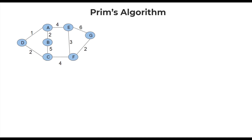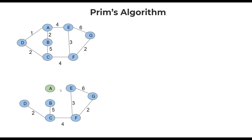Let's take this graph and try to construct a minimum spanning tree by following a greedy technique. To begin with, we can pick any vertex — I am picking A. Consider A to be disconnected from the rest of the graph. Our intention will be to connect A to any of these three vertices. The edge weights are 1, 2, and 4. Since we are following a greedy technique, we will choose the edge with the minimum weight.